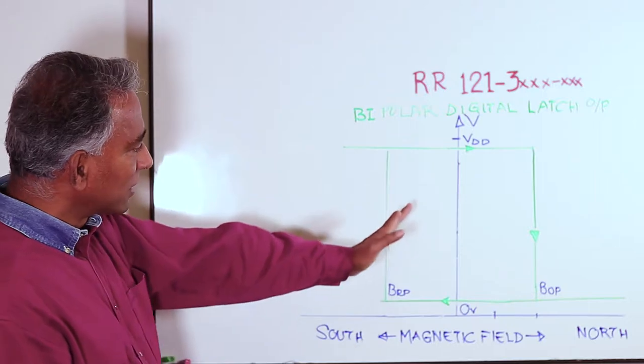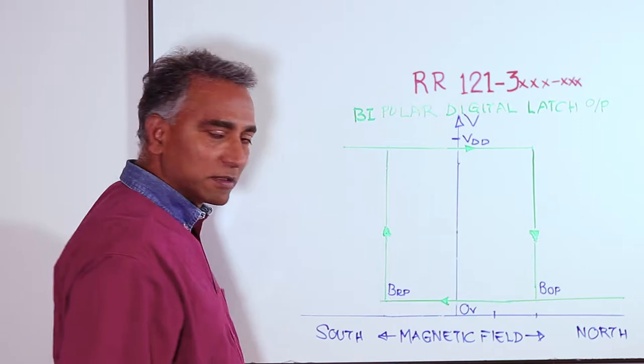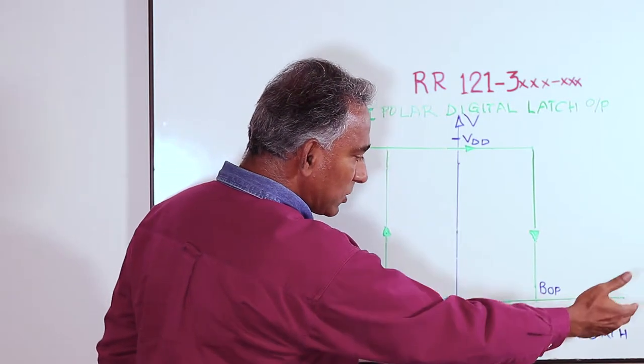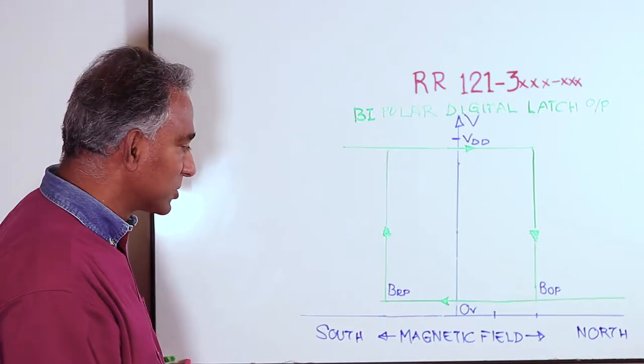On this chart the vertical axis is voltage output and the horizontal axis is magnetic field strength. On the right side increasing north pole field strength and on the left side increasing south pole field strength.